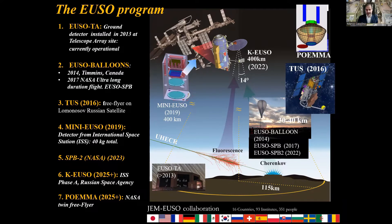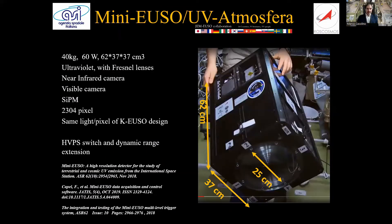There have been two balloon flights and there is a third balloon flight scheduled for next year. There has been TUS flying since 2016. There are several new experiments being developed like KLYPVE and POEMMA, but Mini-EUSO is the first one that went to space, launched in 2019 and is now taking data onboard the International Space Station from the inside. This is also called UV Atmosfera in the Russian space program.